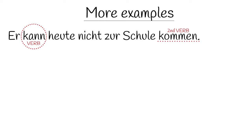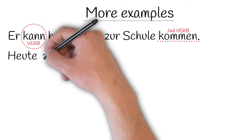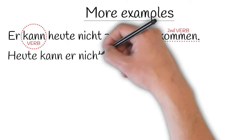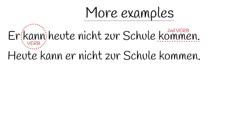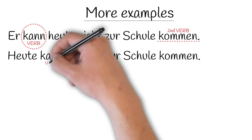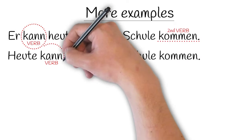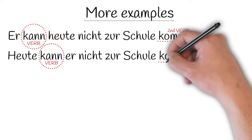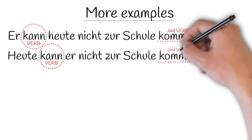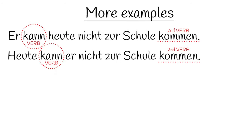For our second example, let's put the time phrase at the beginning of the sentence: 'Heute kann er nicht zur Schule kommen.' As native English speakers, we have to resist the temptation to say 'heute er kann' — that would be incorrect. 'Kann' must remain in the second position.